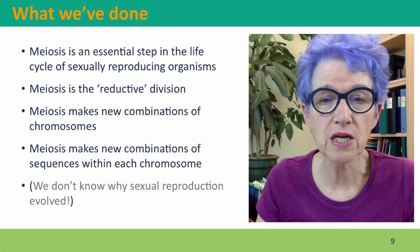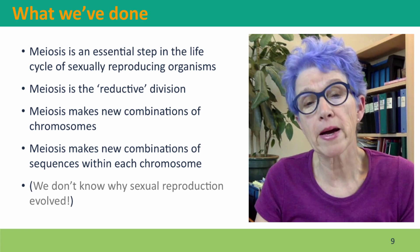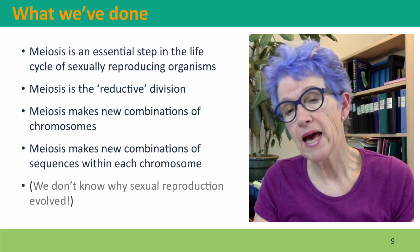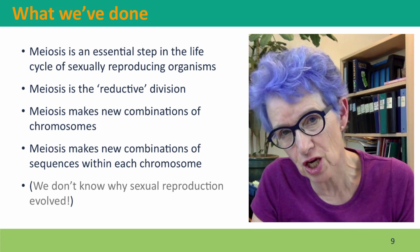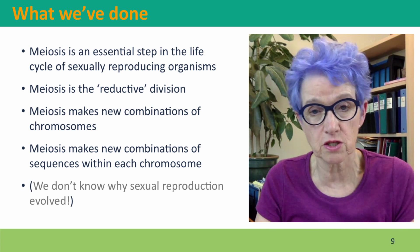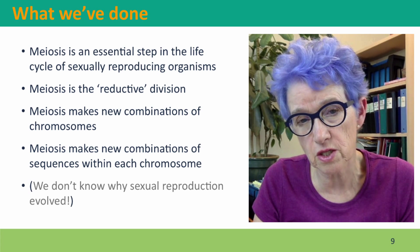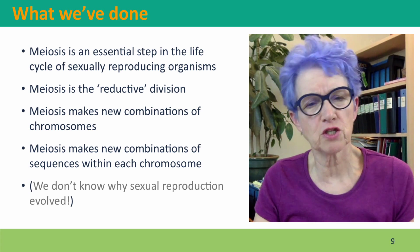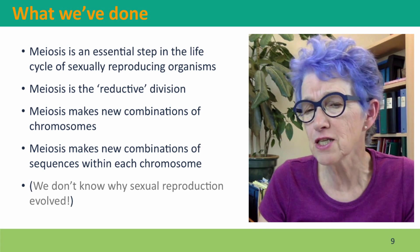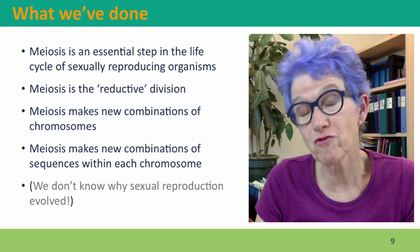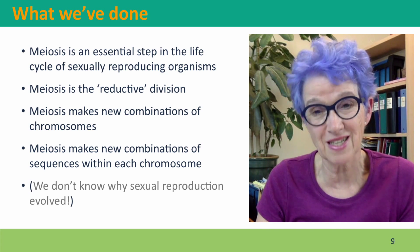So we've considered how meiosis is an essential step in the life cycle of sexually reproducing organisms. We need meiosis as the reductive division and then mating as the process that restores diploid genotypes. But meiosis doesn't just reduce the number of chromosomes — it makes new combinations of chromosomes, and also within each chromosome we have new combinations of sequences. In fact, each of the chromosomes that we get is a new combination of sequences from both parents. And finally, the embarrassing truth: we don't know why sexual reproduction evolved, but it's clear that natural selection considers it very important indeed.